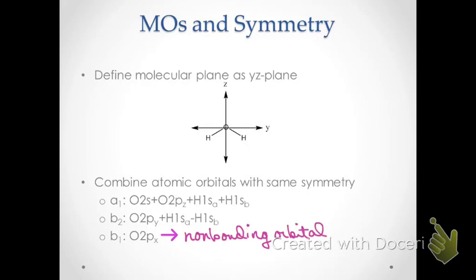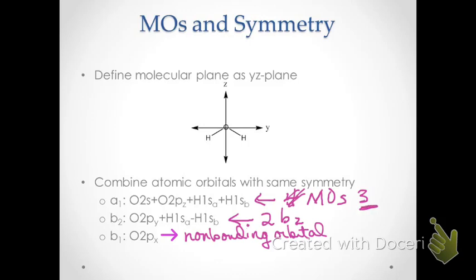It is important to note that because the A1 orbital is a linear combination of those atomic orbitals, we actually get three molecular orbitals of A1 symmetry and two of B2 symmetry. The reason for three A1 symmetry orbitals is something we won't go into detail about at this point.